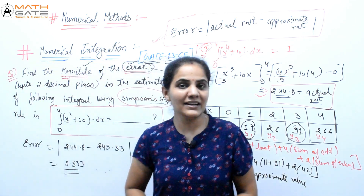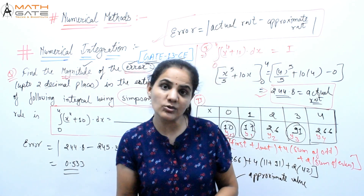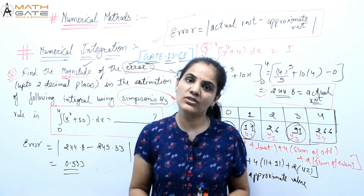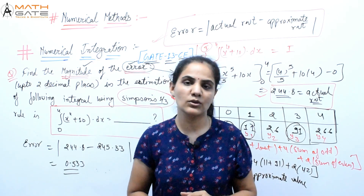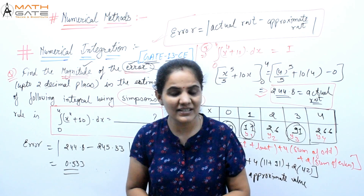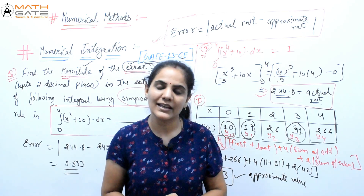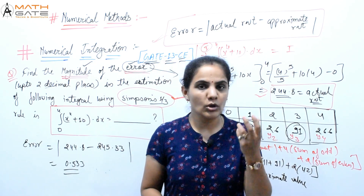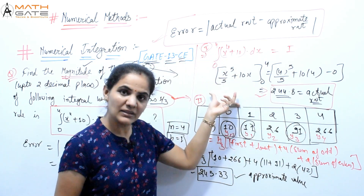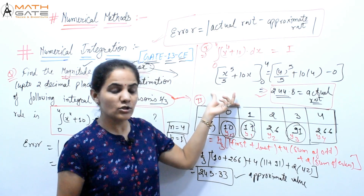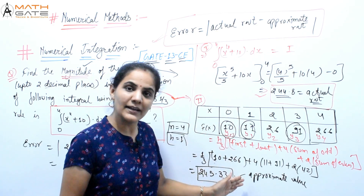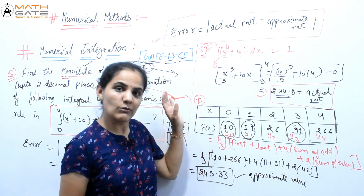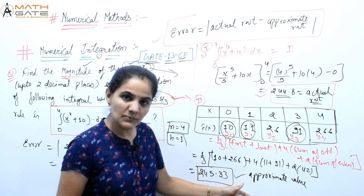A very basic concept: error can be asked in Trapezoidal, Simpson's, or Newton-Raphson methods. In any numerical method question involving error, error = actual root − approximate root. The actual root is found by direct analytical method, and the approximate root is found using whichever numerical method is specified — Newton-Raphson, Trapezoidal, or Simpson's.